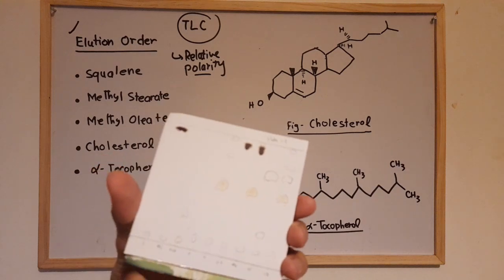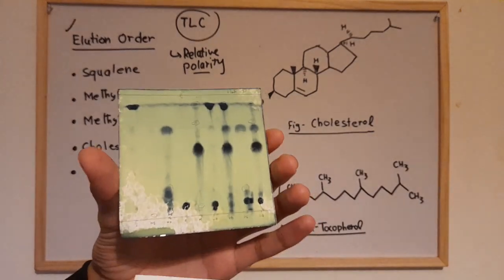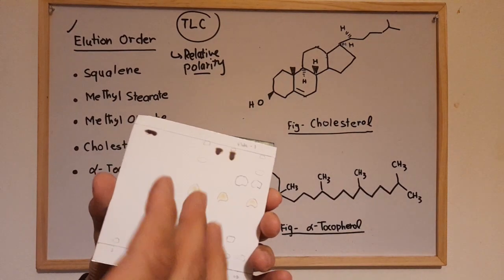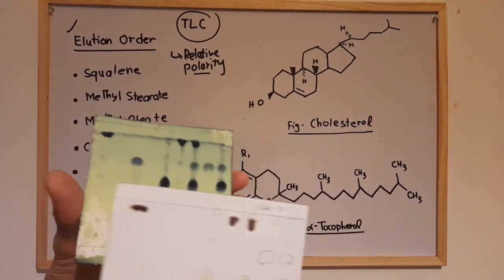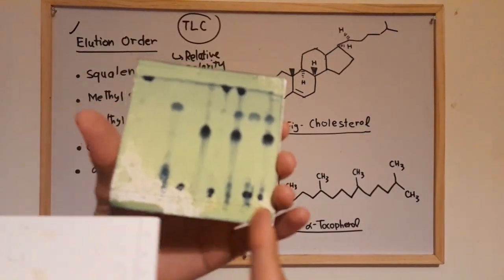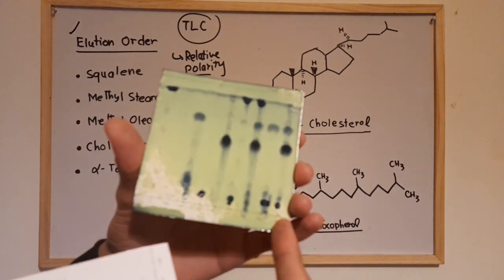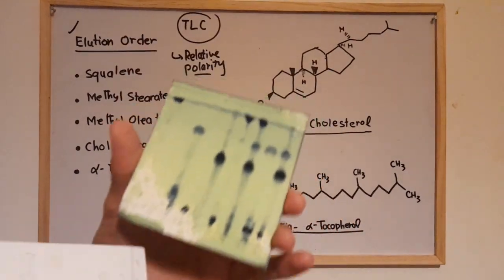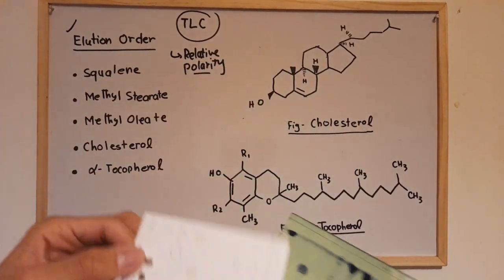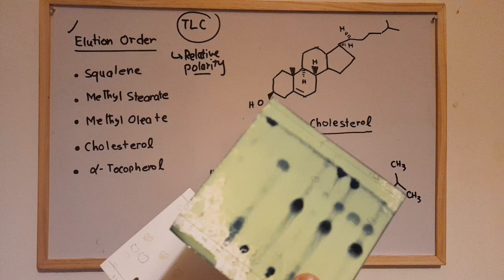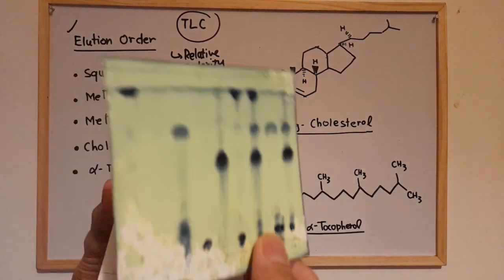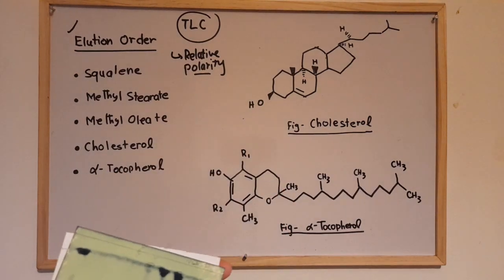You may ask why the TLC plate appears green here — these are staining techniques we will discuss in another video. After placing the plate in the solvent and removing it, you cannot always see the spots directly. You need to stain the plate with iodine or acid, or use UV light to identify the spots.